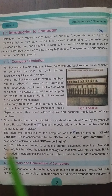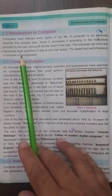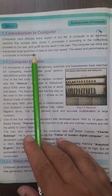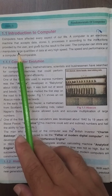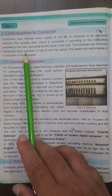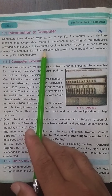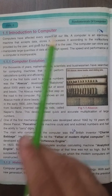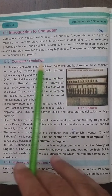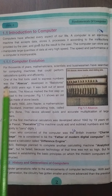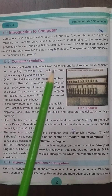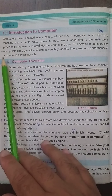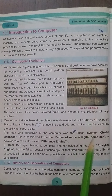A computer is an electronic machine that accepts data, stores it, processes it according to the instructions provided by the user, and gives out the result to the user. The computer can store and manipulate large quantities of data at a very high speed. The speed and performance of a computer is incomparable — 'incomparable' means جس کی کوئی مثال نہ ہو۔